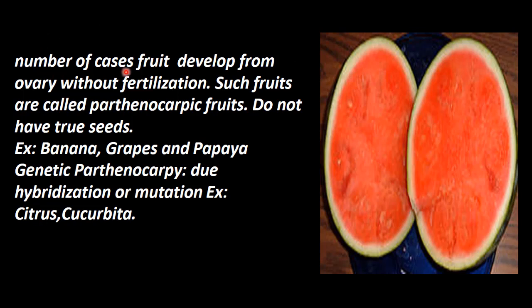In a number of cases, fruits are developed from the ovary without fertilization — that process is called Parthenocarpy. This can be natural or artificial. Such fruits are called Parthenocarpic fruits.